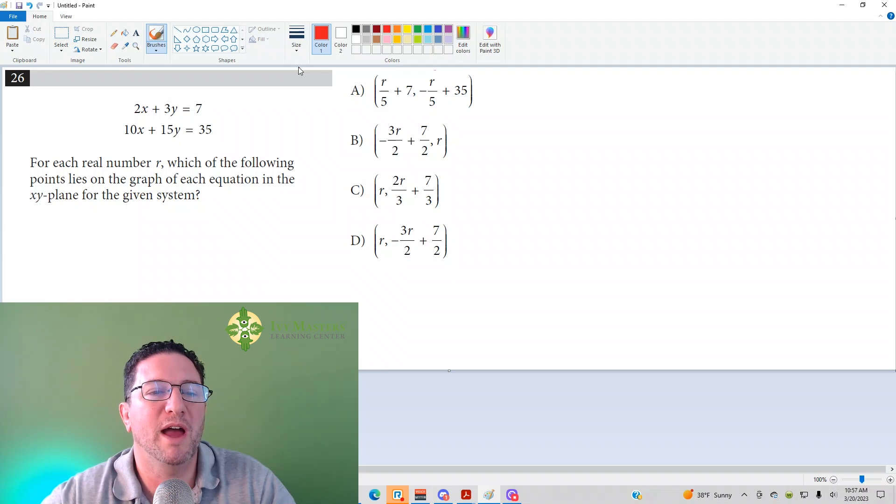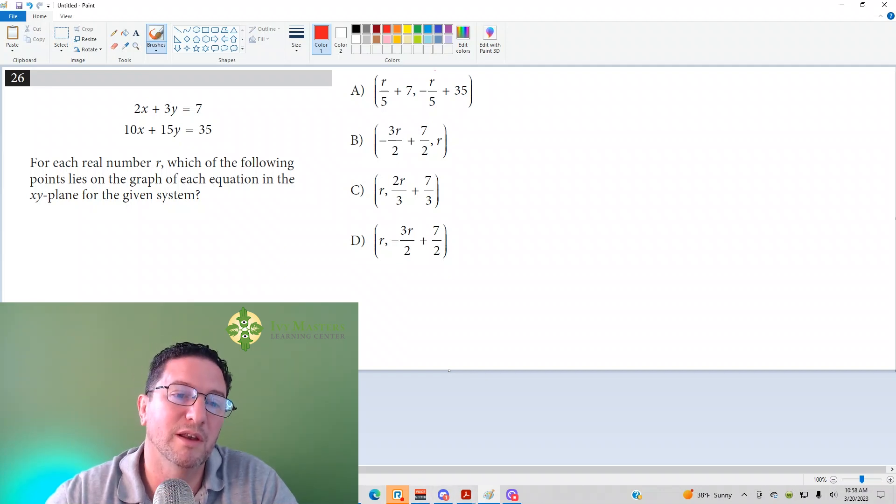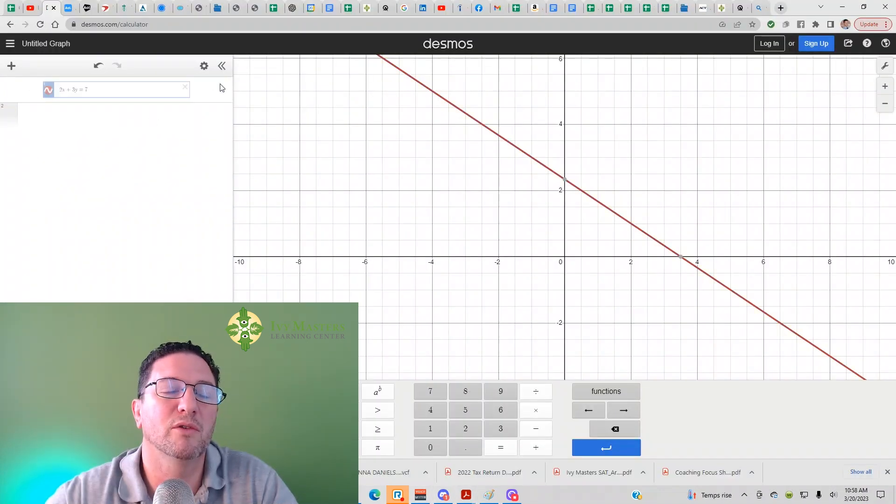So when you have a system of equations, the solution to the system of equations is the intersection point. So we're looking for the intersection point here. Easiest way to do that, plug it into Desmos, unless there might be something that you notice here, but it's unlikely that you will notice it, honestly. So actually, you can get rid of these.